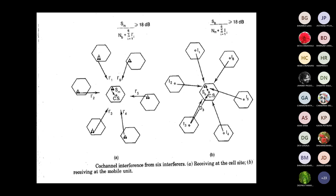For the first case, co-channel interference originates from the center cell. From the center cell, we get six co-channels based on the hexagonal cell layout. If a mobile unit in a co-channel cell has the same frequency as the center cell, we get interference: i1, i2, i3, i4, i5, i6 — that is six interferences due to the mobile unit.